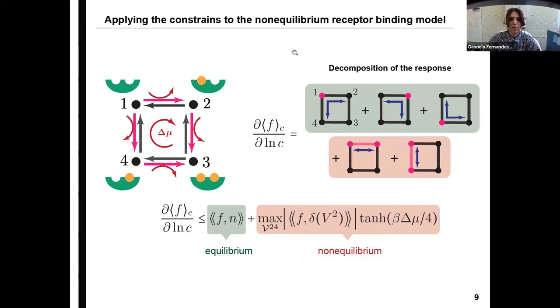So now we are actually ready to answer the question that we had in the very beginning and go back to our non-equilibrium receptor binding model. So now if we use our approach and we look at the sensitivity, we see that this response can be decomposed in five different responses, while three of them are equilibrium-like. So they are equilibrium-like in states one, two, and four. And the other two are symmetric-like. So they correspond to perturbing energy barriers between states one and two and between states one and four. So now using the bounds that we found, we have the sensitivities bounded by an equilibrium-like term, which is the covariance between F and the ligand occupation number, plus now the maximum of between topological splittings between states two and four of the covariance of the observable F over indicator functions over subsets that contain state two, times the hyperbolic tangent of the non-equilibrium driving over four.